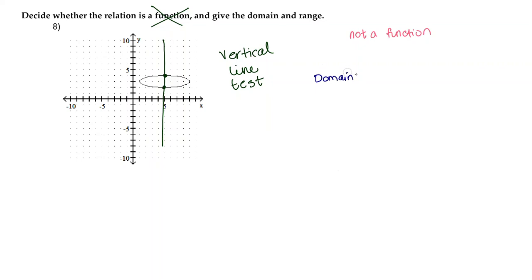So domain is going to be all of the values of x that exist for the relation. Starting from the left, we're going to move to the right and we're going to take notice as to where the relation starts existing. It looks like it starts existing at 1 and this includes 1.